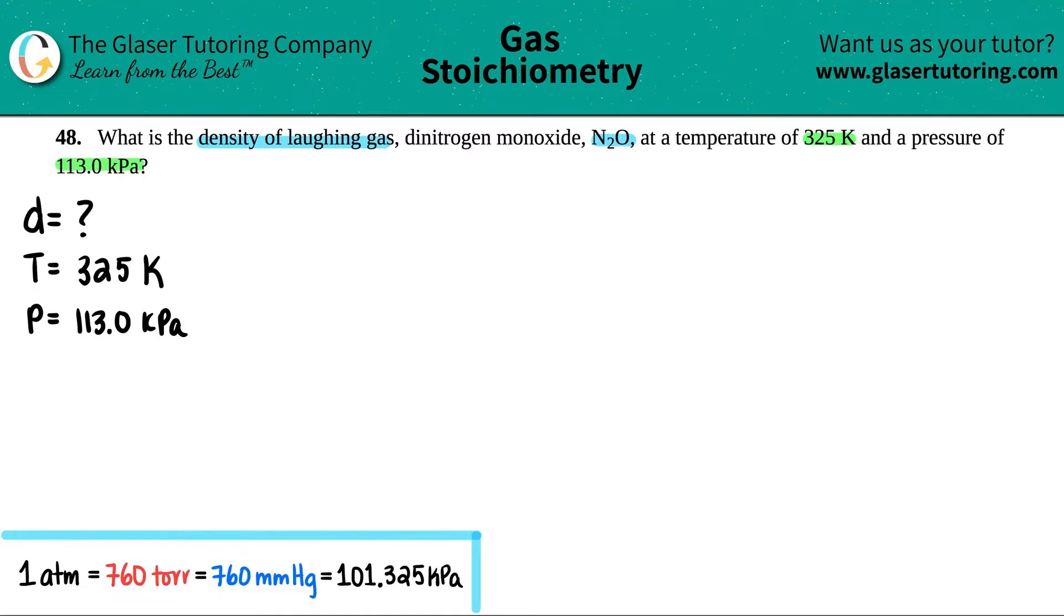In this case, I'd like to call it this: PMM equals DRT. So it used to be PV equals NRT. Now it's PMM equals DRT. Keep in mind that since the R value is still here, this is locking all the units in.